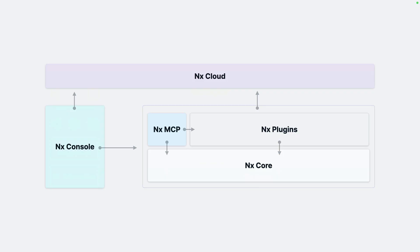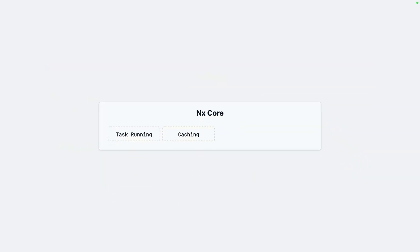NX is written in a modular fashion, where each individual part can be applied incrementally as needed, and also depending on where you currently are in the development lifecycle. So let's start with the NX core. NX core is written in Rust and is technology independent. Its responsibility is to provide the base features for efficiently running tasks, caching in terms of speed, workspace analysis, and it also has a dedicated terminal UI.